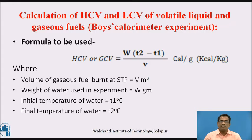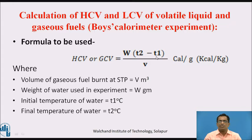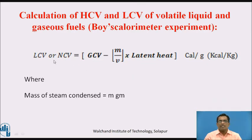Calculation of HCV and LCV by Boy's calorimeter experiment. The formula to be used is: HCV or GCV = W × (T2 − T1) / V, where W is the weight of water used in the experiment, T2 is the final temperature, T1 is the initial temperature of water, and V is the volume of gas used for the operation. LCV or NCV = GCV − (M / V) × latent heat, where M is the mass of steam condensed.